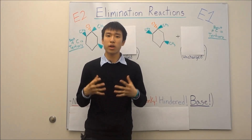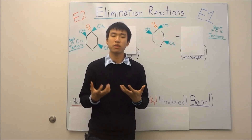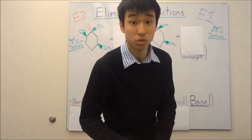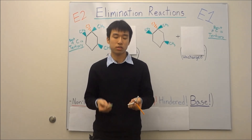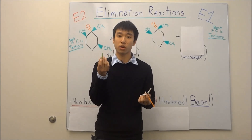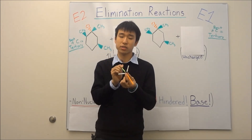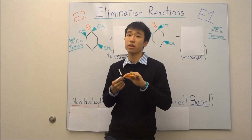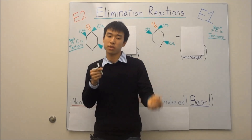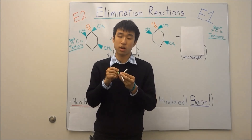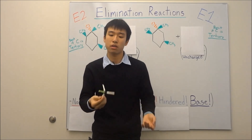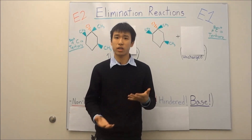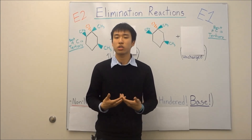Why do we even have to learn about elimination reactions? You've probably already learned about substitution reactions. In a substitution reaction, you have a nucleophile that attacks or substitutes into a carbon attached to a leaving group — usually a halide like chlorine — and when it attacks, it kicks off the halide and your nucleophile gets substituted on. You could then modify your molecule and turn it into something like acetaminophen, which is a painkiller — you know it as Tylenol.